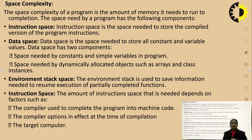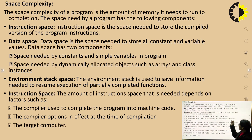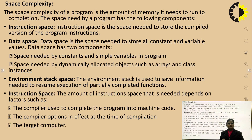The space needed by a program has the following components. First is the instruction space — the space needed to store the compiled version of the program instructions. That is called the program instruction and it is saved in the instruction space.